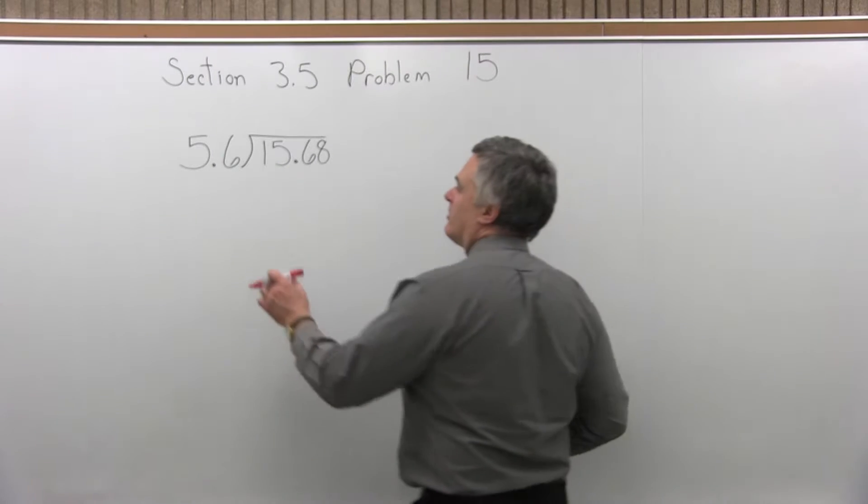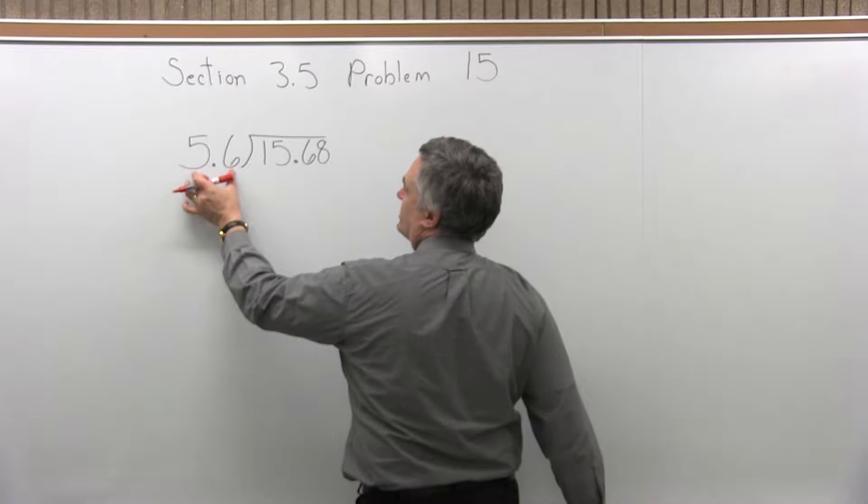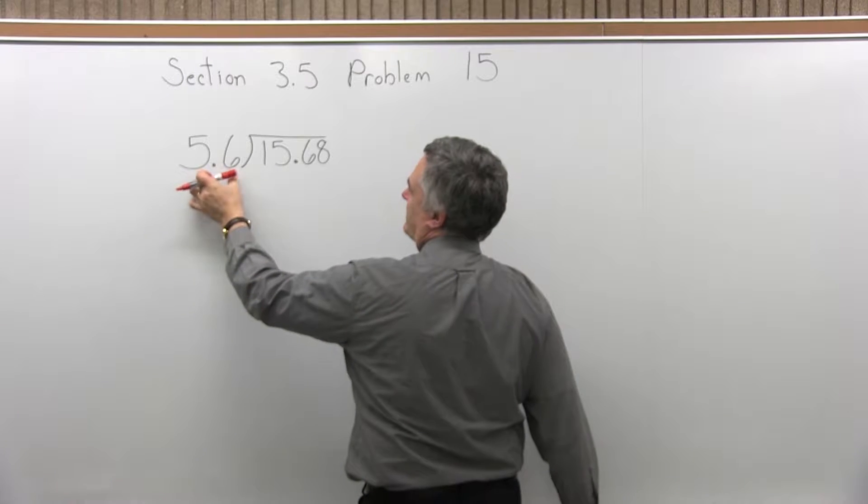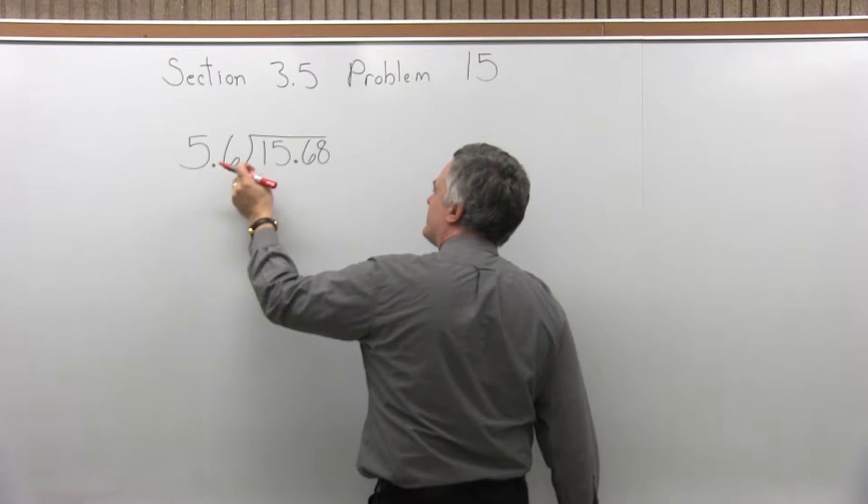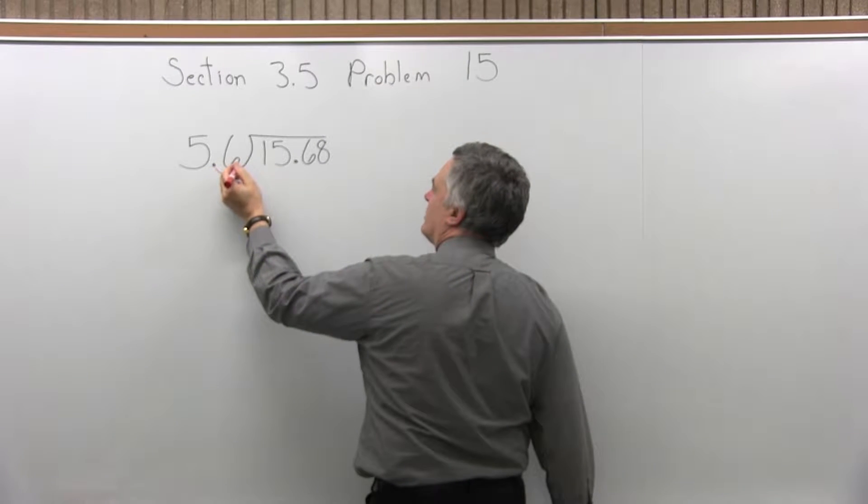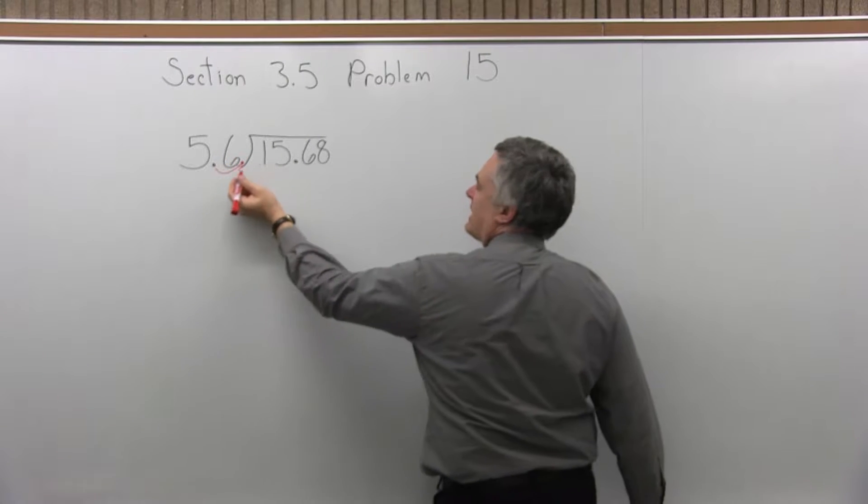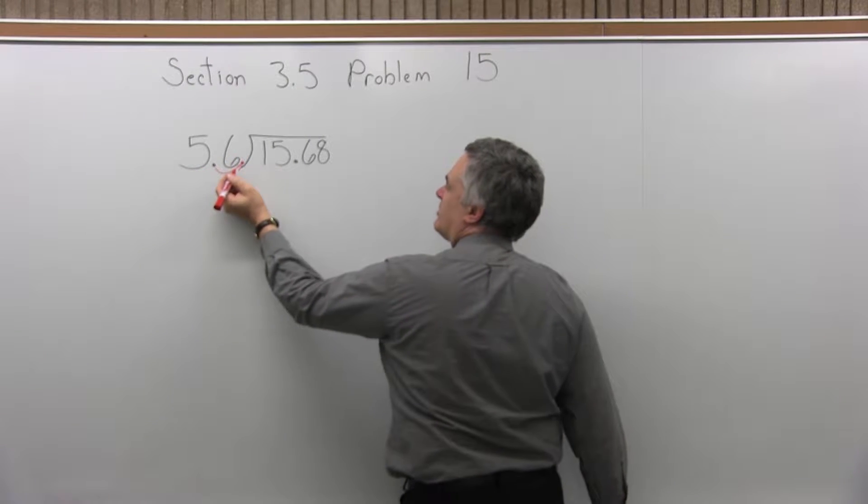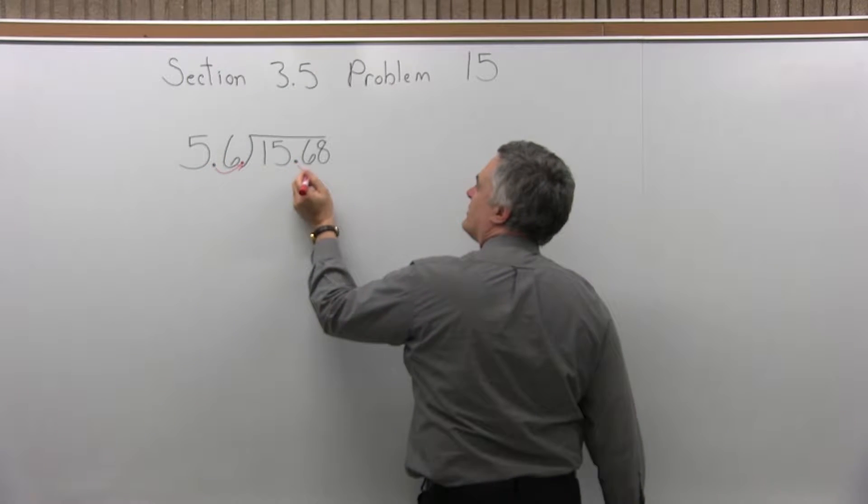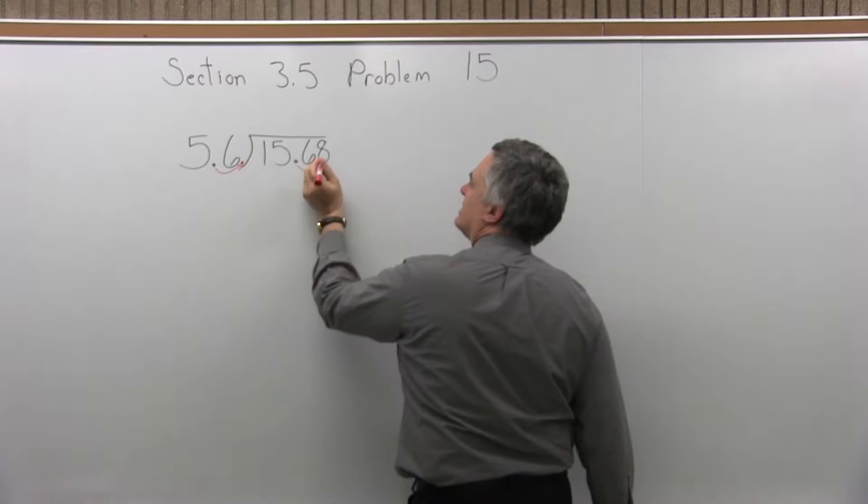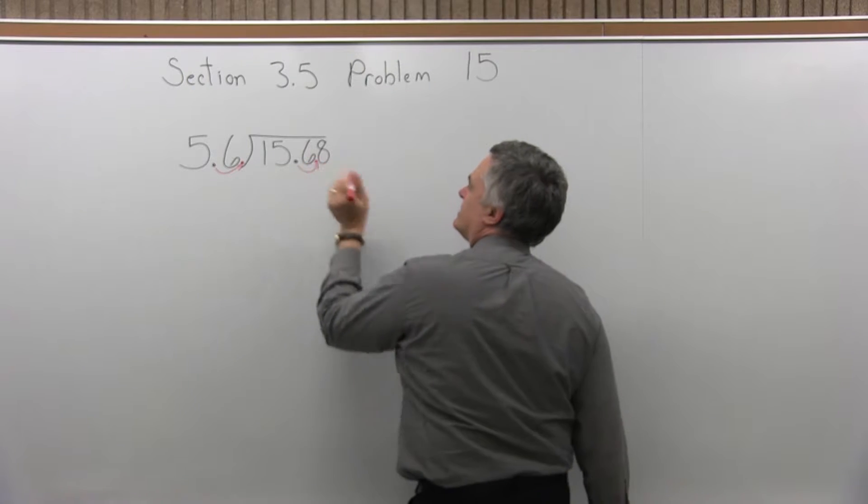So for a problem like this with division, the number in front of the division symbol, or what's really called the divisor, has to have the decimal point written as far to the right as it will go. So that means it has to be moved over, for this problem, one spot. Now the rule is, however many places you move the decimal point for the number outside of the division symbol, you have to move it the same number of places for the number under the division symbol.